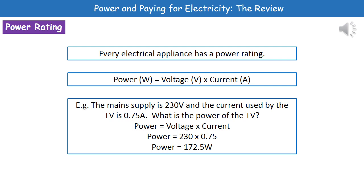You don't have to memorize it — just remember page 2 — which is: power in watts equals the voltage in volts times the current in amps. To give you an example of the kind of question they could ask, the main supply is 230 volts and the current used by the TV is 0.75 amps. What is the power of the TV?